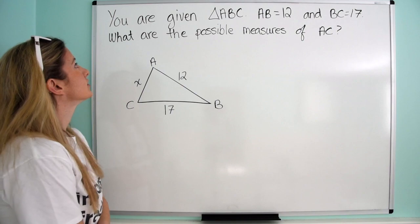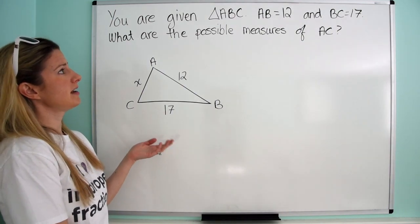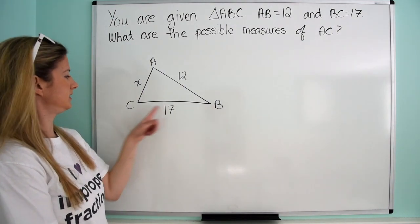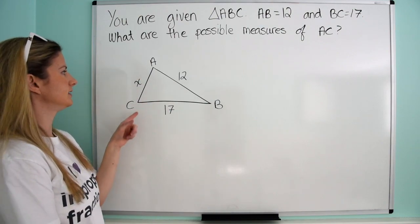Let's try this problem. You're given triangle ABC, AB is 12, BC is 17. What are the possible measures of AC?